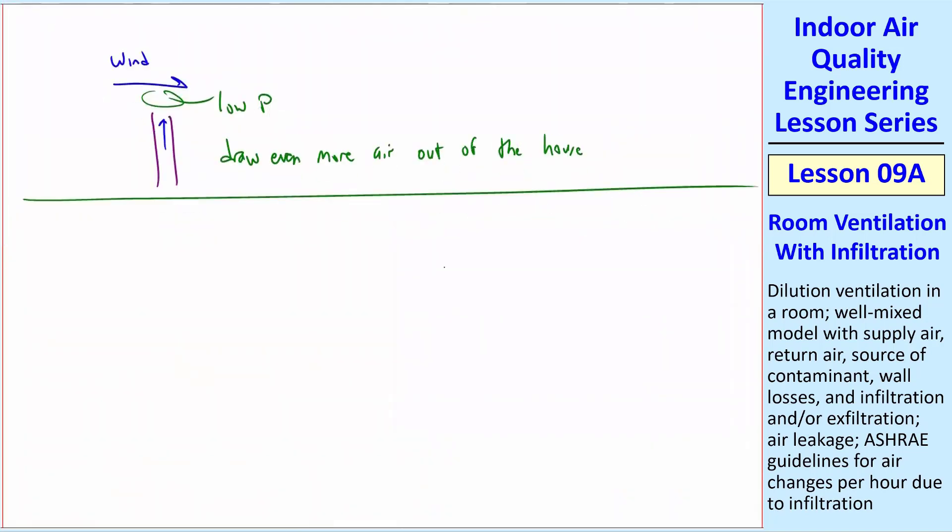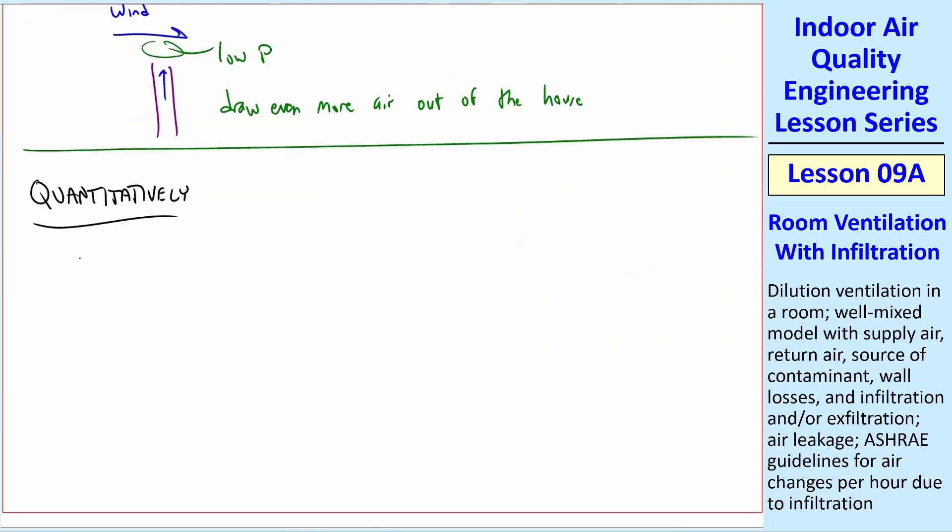What I want to do now is look more quantitatively. A couple of comments before we get to equations. Infiltration and exfiltration are typically in units of air changes per hour. Recall, for a room, we had N equal Q over V, the flow rate divided by the volume. So this is the number of room air changes per hour.